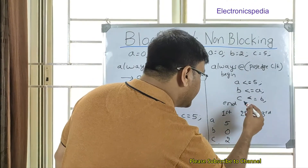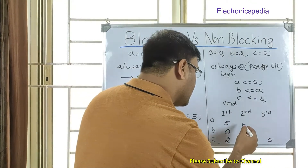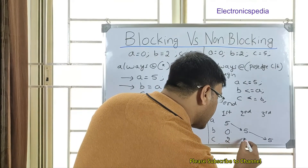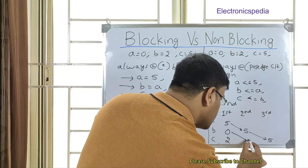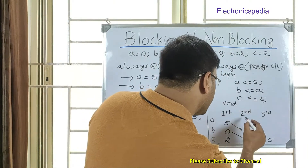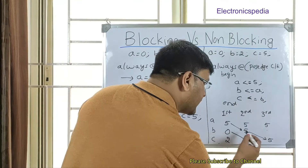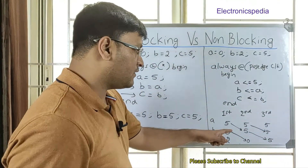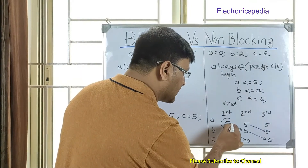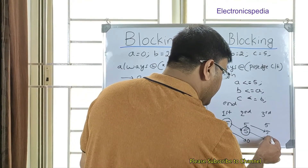In the second clock cycle, B gets the value 5 because it now reads A's updated value from the previous cycle. C gets 0, which was B's value from the first cycle. In the third clock cycle, C finally gets the value 5. So A gets 5 after the first clock cycle, B gets 5 after the second, and C gets 5 after the third.